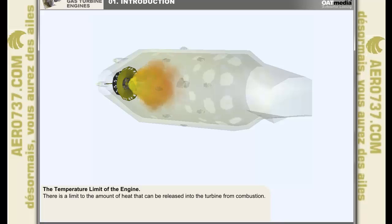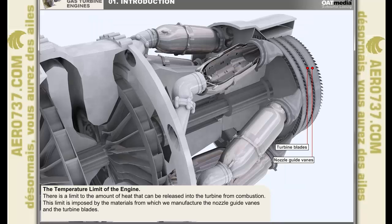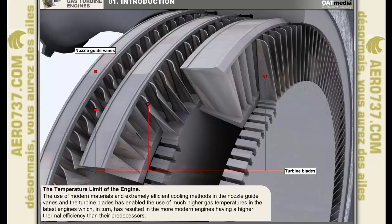The turbojet is a heat engine. The higher the temperature attained in combustion, the greater the expansion of the gases, and hence the greater efficiency of the engine. There is, however, a limit to the amount of heat that can be released into the turbine from combustion. This limit is imposed by the materials from which we manufacture the nozzle guide vanes and the turbine blades. The Germans' inability to produce materials which could withstand the heat of the gas stream was the main problem with the early German gas turbine engines. Because of the poor materials used in the turbine assemblies, the engines would only run for between 10 to 20 hours before the turbine blades suffered meltdown and engine disintegration commenced, usually in a quite catastrophic fashion. The use of modern materials and extremely efficient cooling methods in the nozzle guide vanes and the turbine blades has enabled the use of much higher gas temperatures in the latest engines. This has resulted in the more modern engines having a higher thermal efficiency than their predecessors.